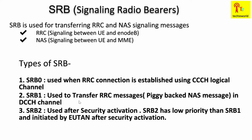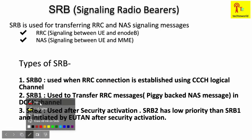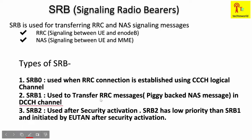SRB1 is used to transfer RRC messages, usually piggybacked messages. As we know, in the eNodeB there is no NAS layer, so if we want to transfer NAS messages from the UE to the network, we need to piggyback the NAS message inside the RRC message. This piggybacked message will be carried by SRB1 in the DCCH (dedicated control channel).